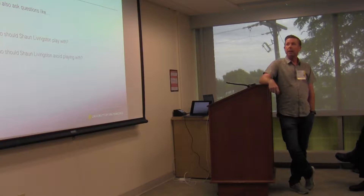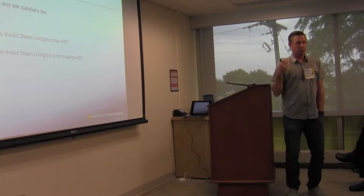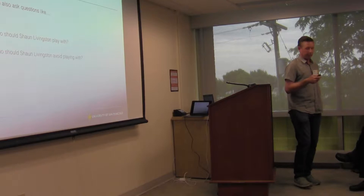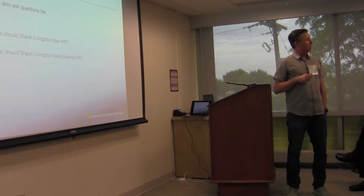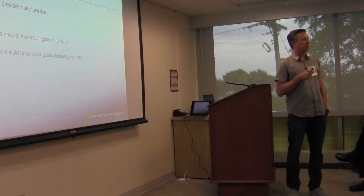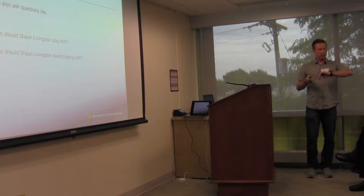The other question I want to get into at the end is: even if you knew that, what can you do with it? It's not a total shock that Steph Curry and Klay Thompson are both good together, but you still have to rest those guys. Players like Shaun Livingston are important, and it might be nice to know which players pair particularly well or poorly with him.